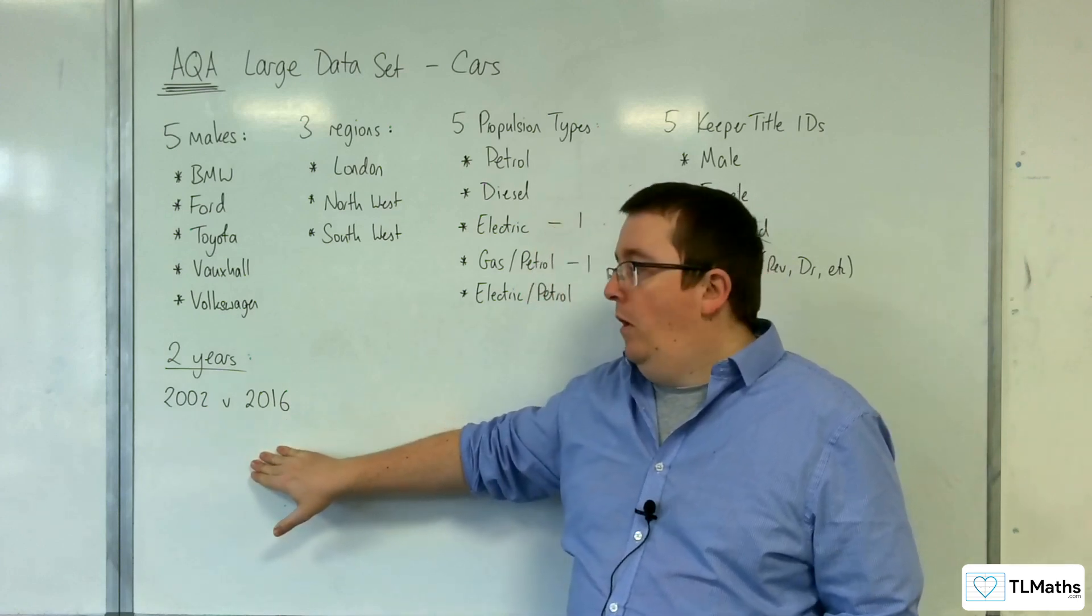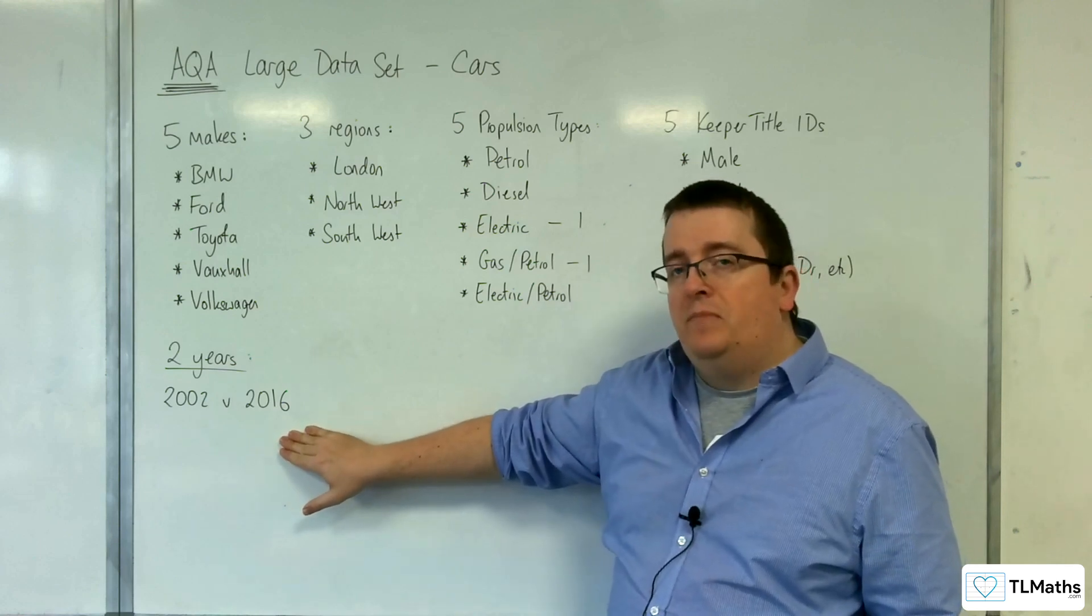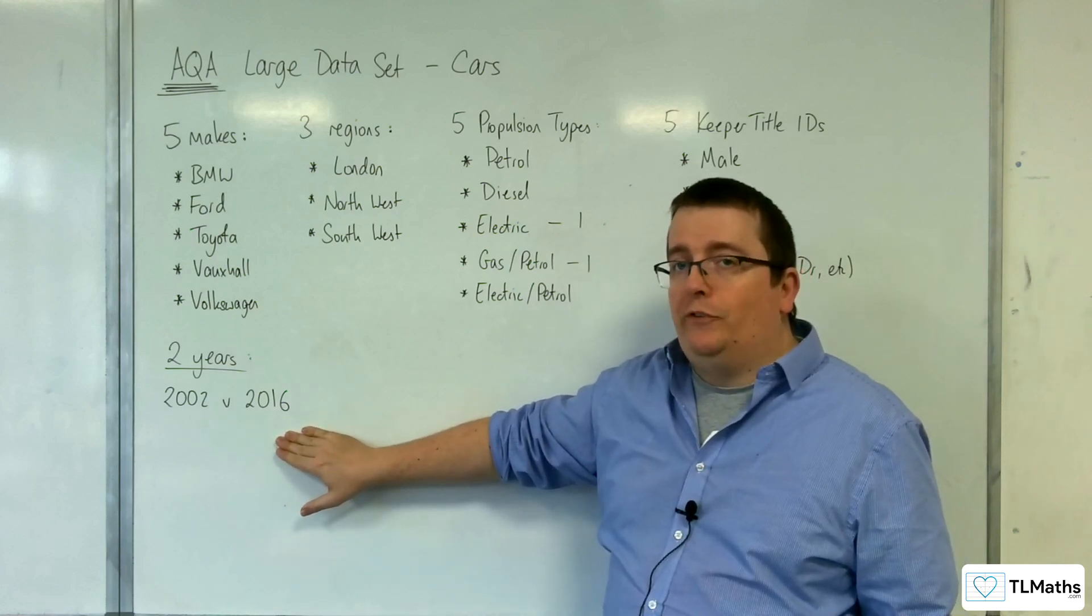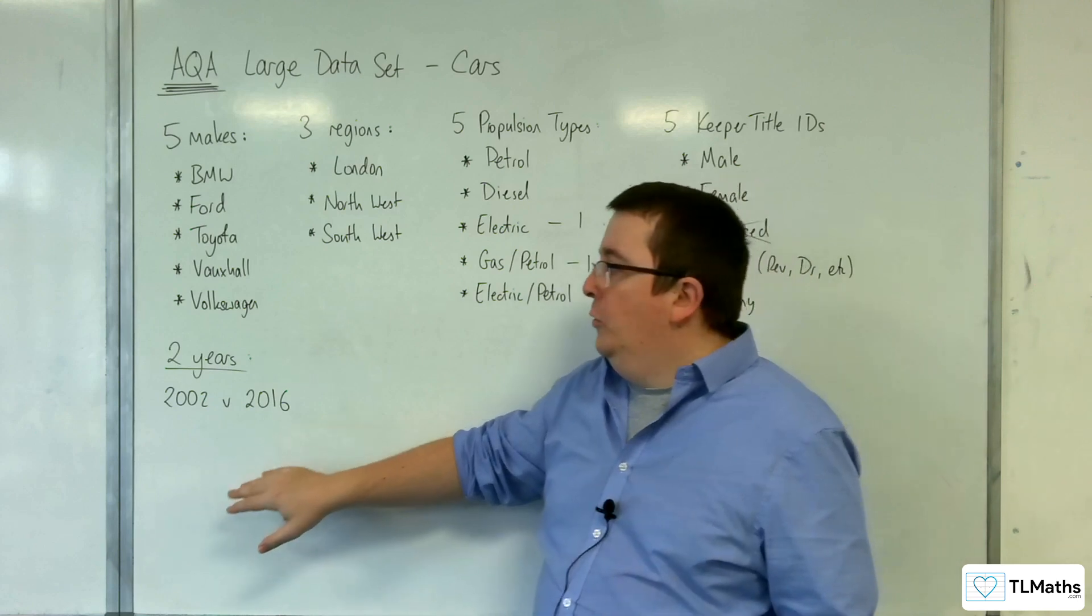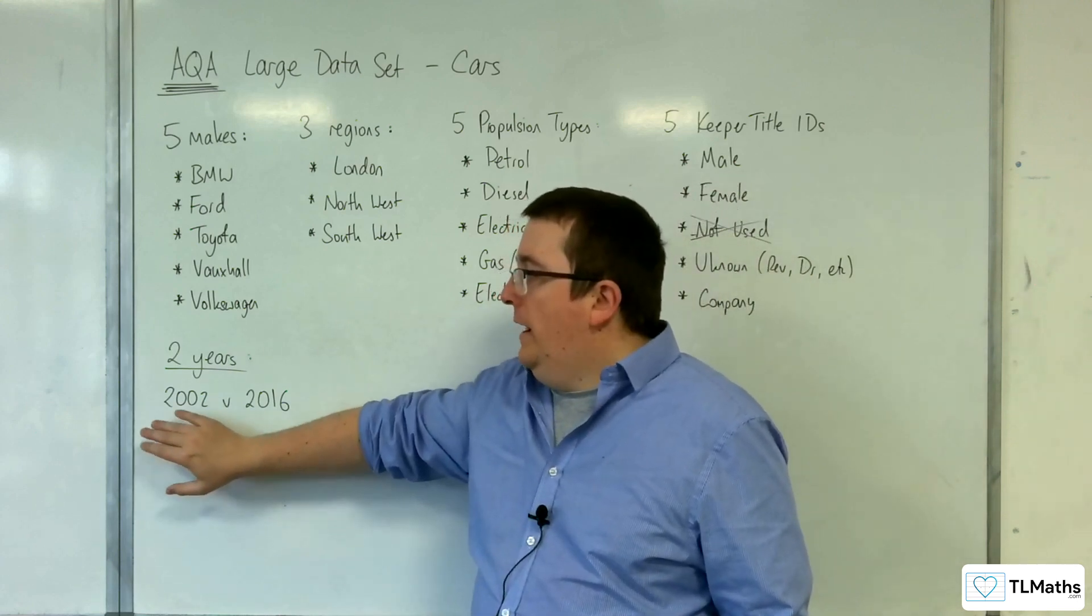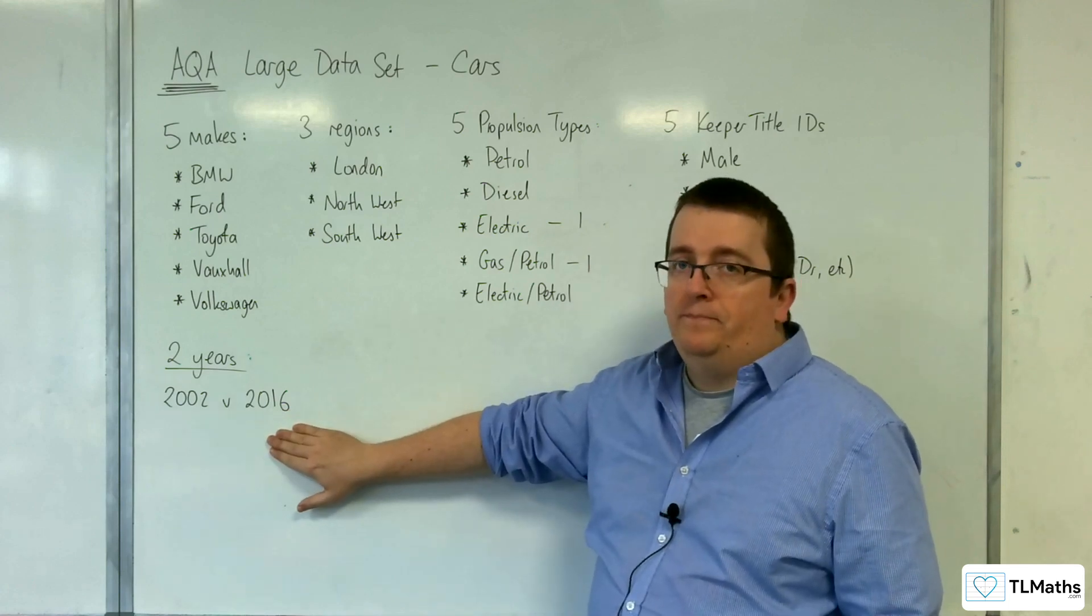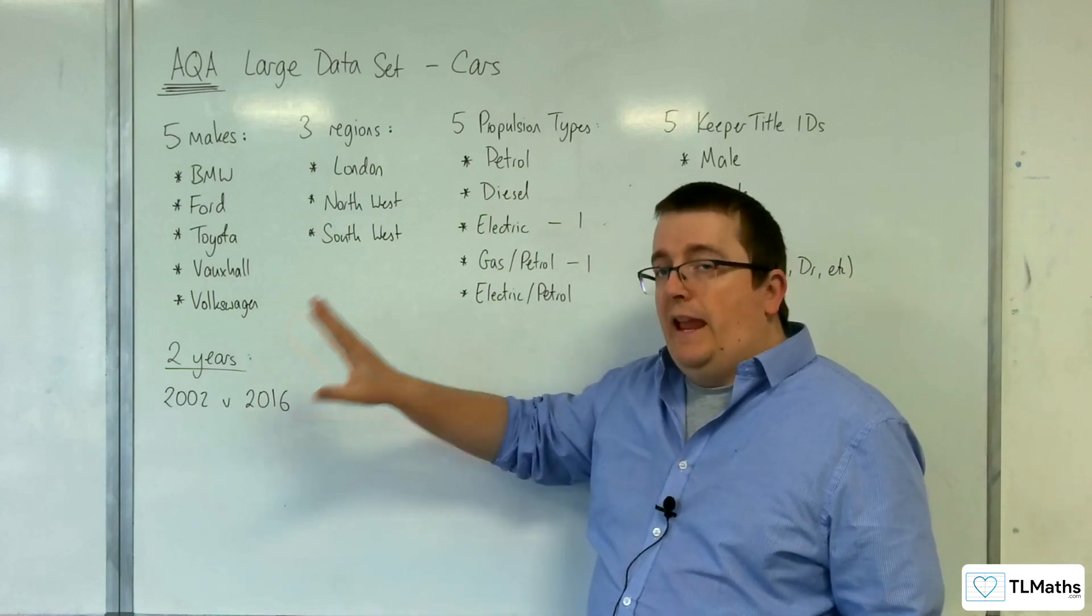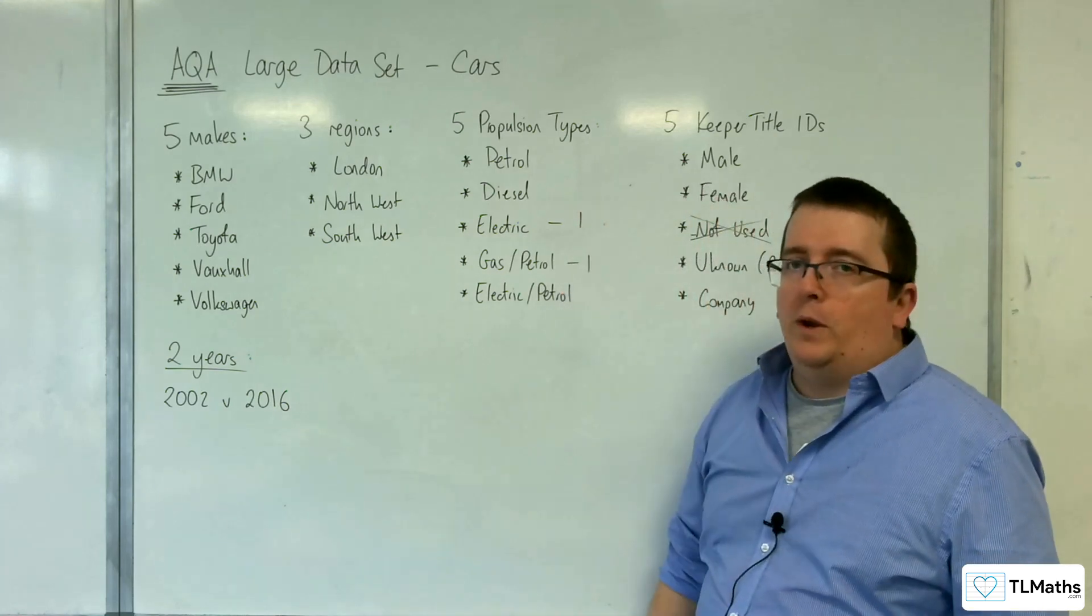The reason why they've put this gap between 2002 and 2016 is because it includes the emissions scandal that happened between those years. So it is worth knowing that there are only two year groups that you consider. And in the intervening years, there was the emissions scandal, which is worth having a quick read up on.